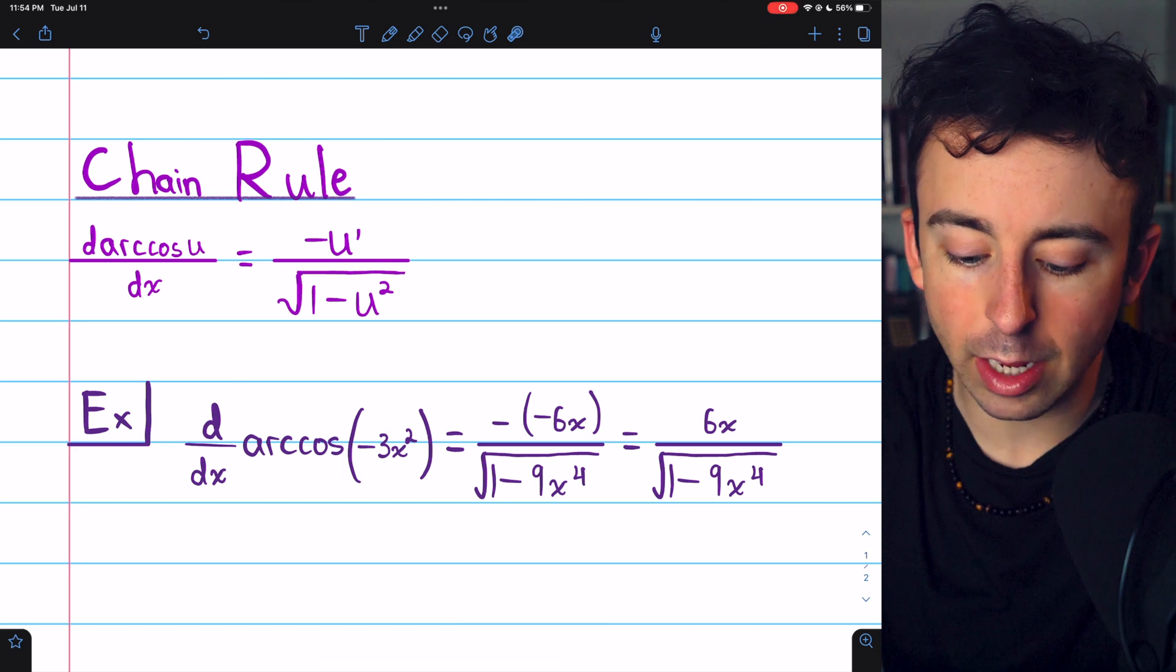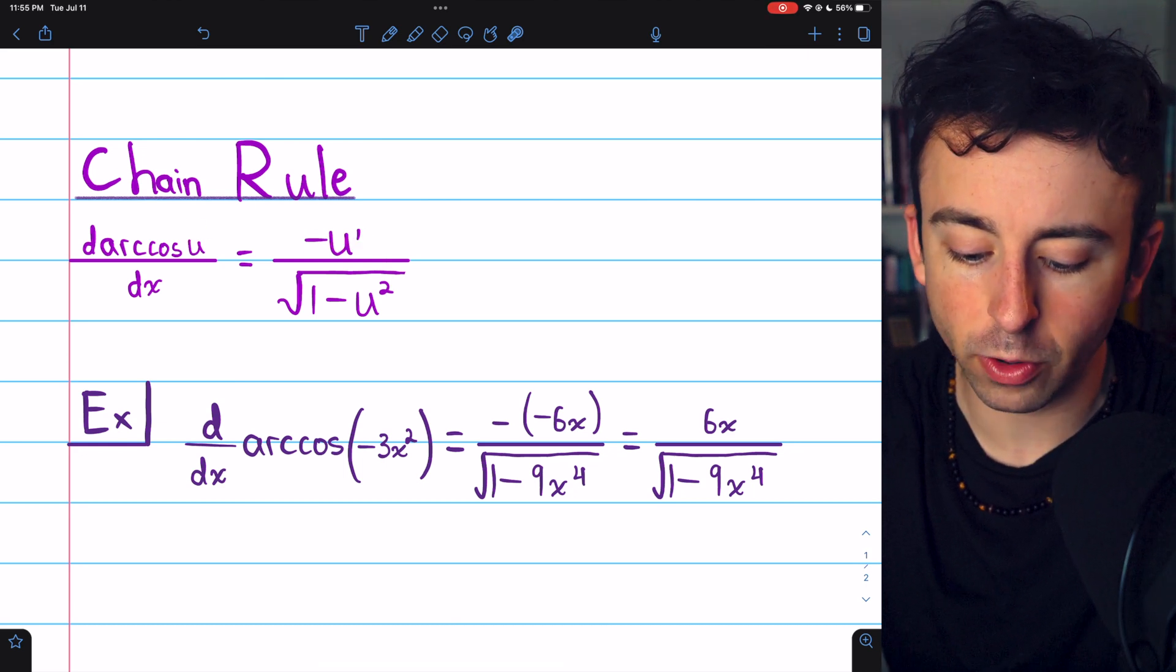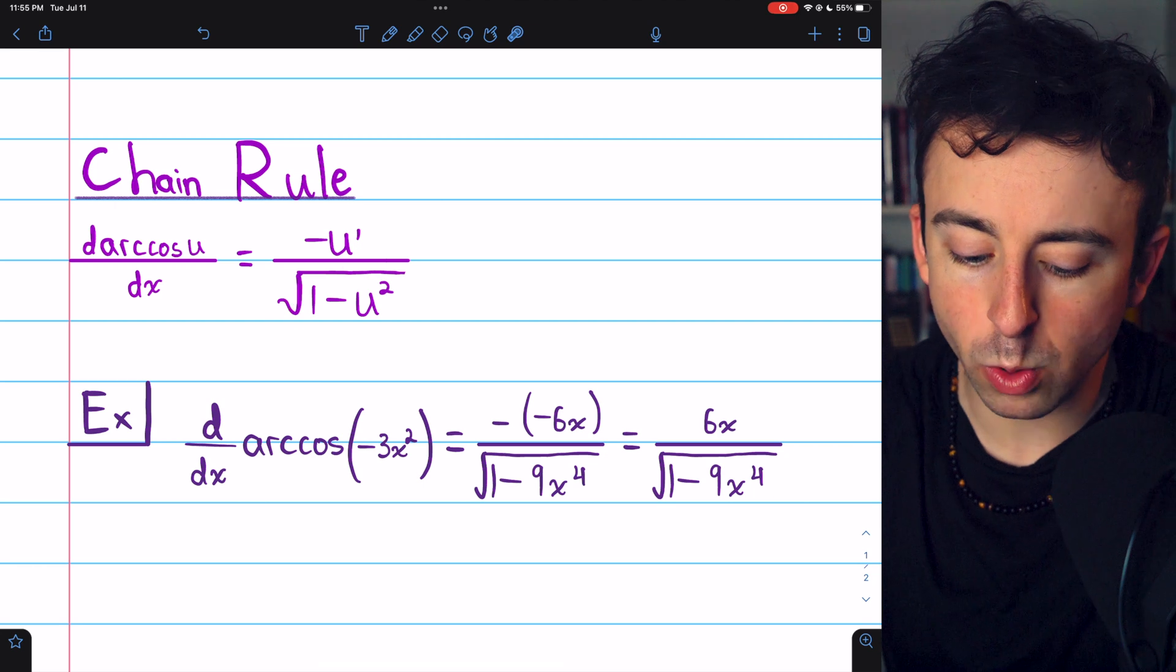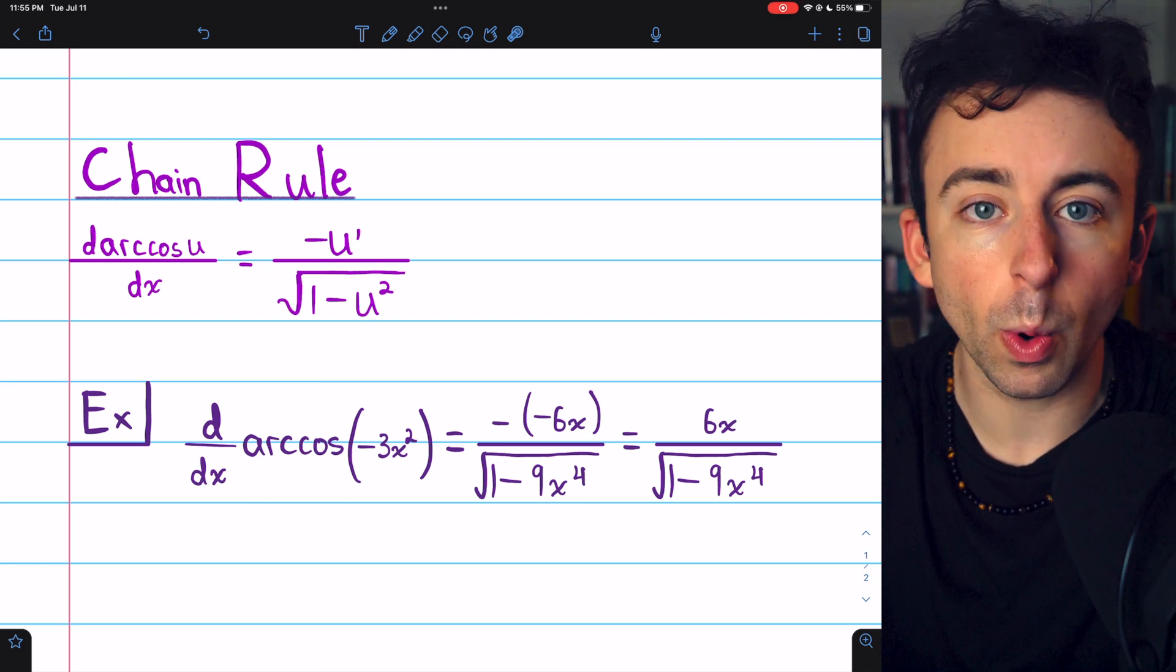then by the chain rule, the derivative is negative u prime, the derivative of that inside function, divided by the square root of 1 minus the inside function squared.